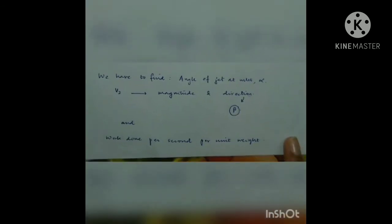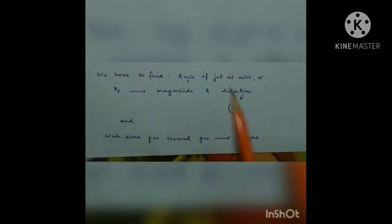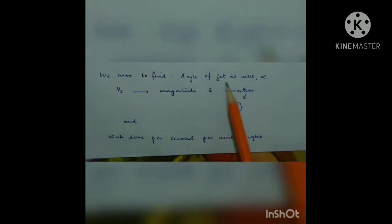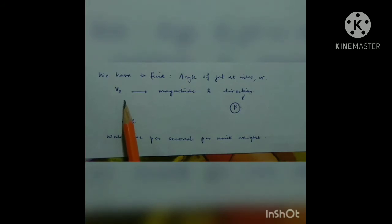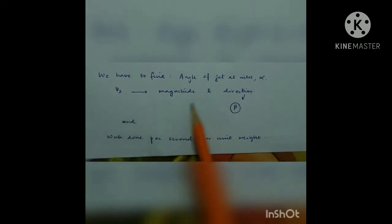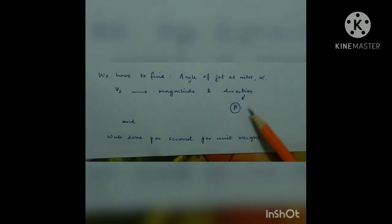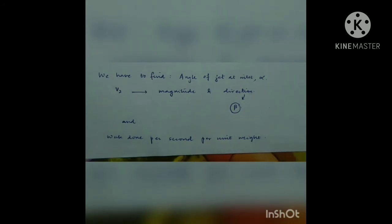Before we go to the answer, let us note down what we have to find. We have to find: the angle of the jet at inlet, that is alpha; the absolute velocity at the outlet V2, in both magnitude and direction — direction meaning we need the value of beta; and the work done per second per unit weight.